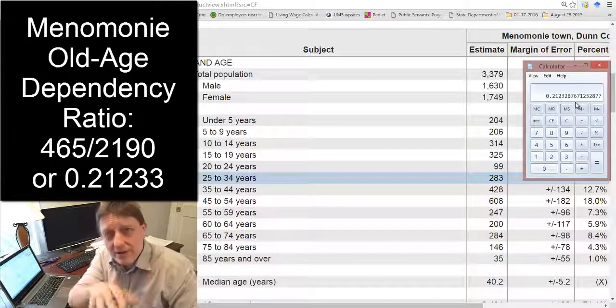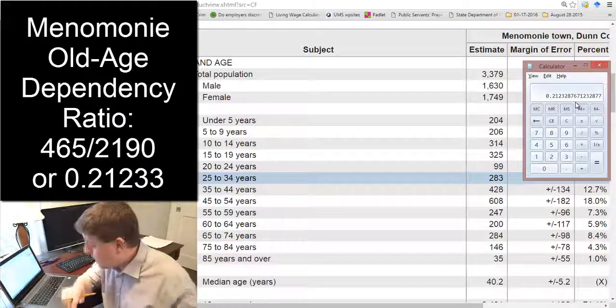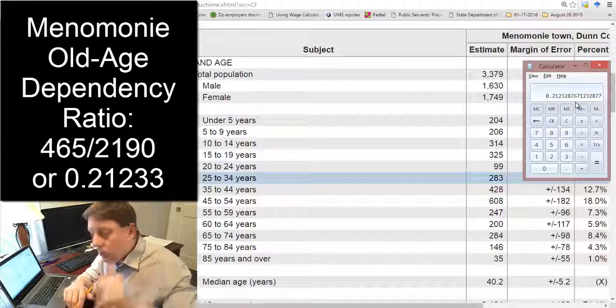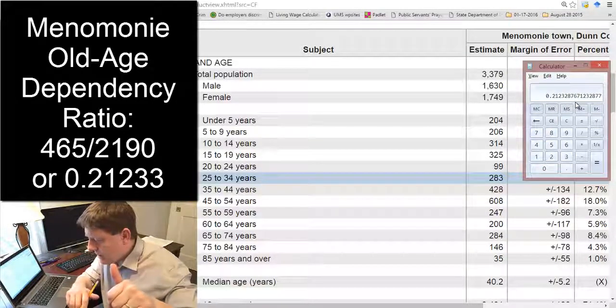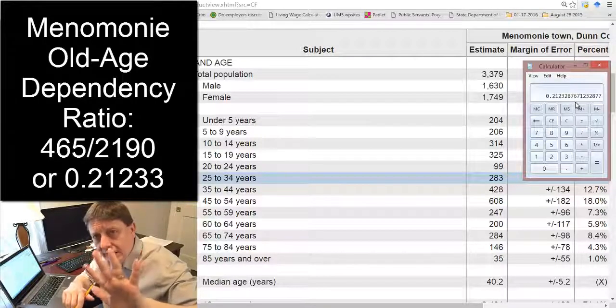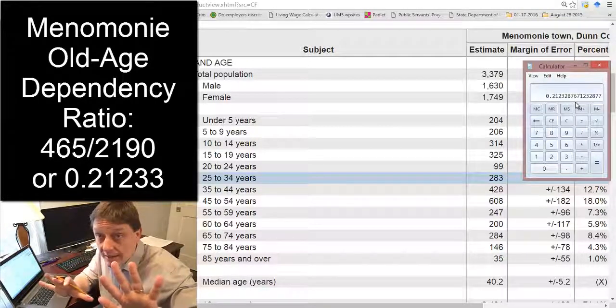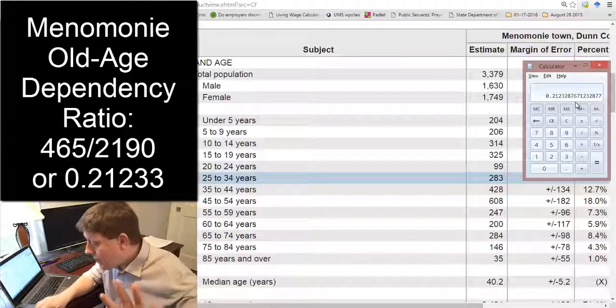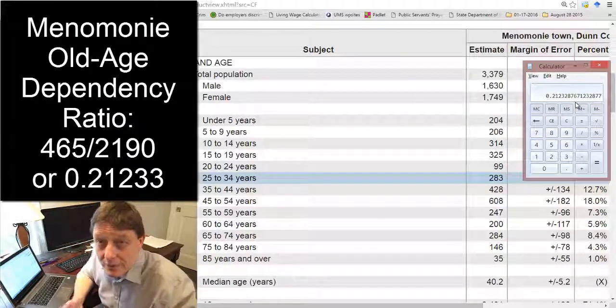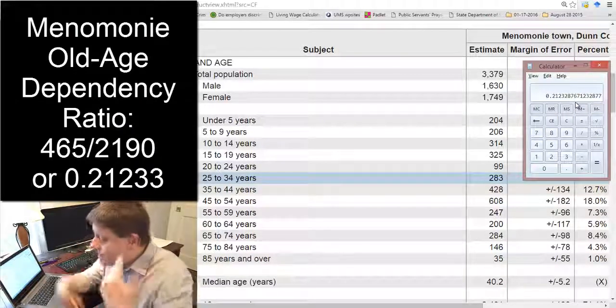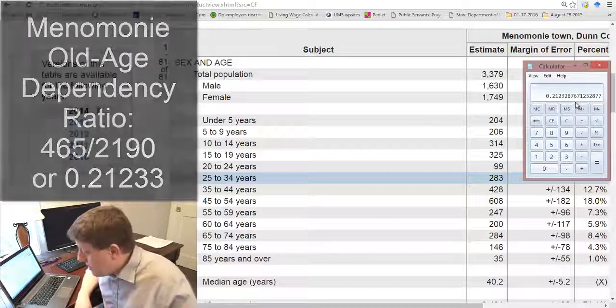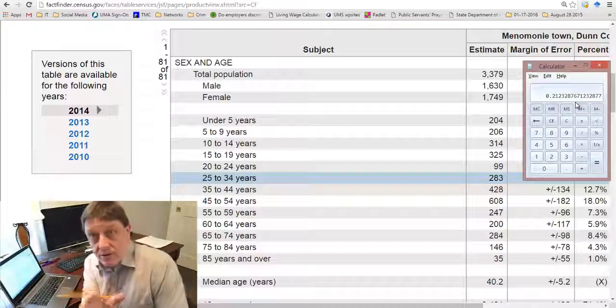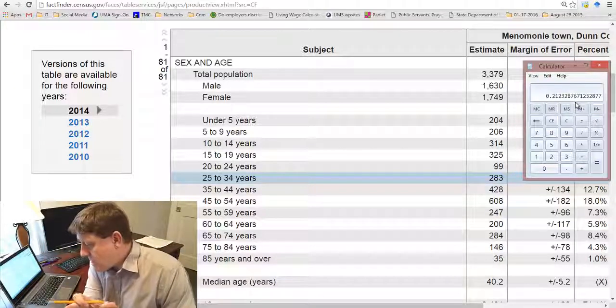It means that just about, okay, I'm fudging the math a little bit here, it means that for every old person, right, that there are about five, old meaning of retirement age. Okay. There are about five people of working age, because 0.2 times five is one. Okay. So that's the meaning of the old age dependency ratio. We also can notice that there are fewer retirees in the town than there are youth. That's interesting, right? So most of the dependency that's happening in the town, although not a huge majority, a majority is happening because of youth that are there.